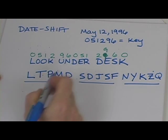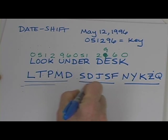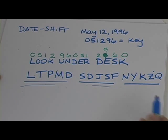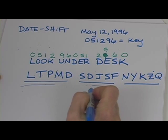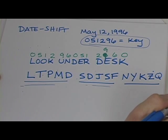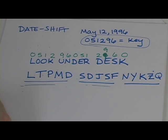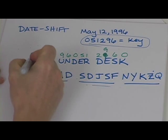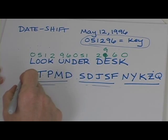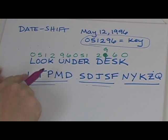So, look under desk is now encoded as this message. Now to decode, you need to write the key number over the cipher text. Okay, so to decode it, I will write it in another color. Okay, so if I had this, I would first have it like this.